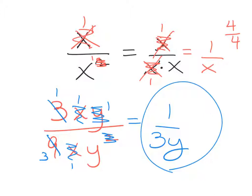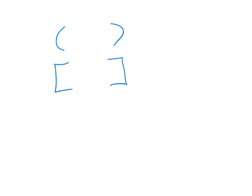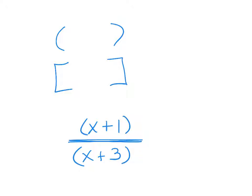One thing I want to talk about is grouping symbols. Parentheses are grouping symbols, brackets are grouping symbols, but a fraction bar is also a grouping symbol. If I have x + 1 over x + 3, the numerator and denominator are each grouped together by the fraction bar. When I go to simplify this rational expression, I can't just cancel the x on top with the x on bottom, because each x is attached to the 1 and to the 3. This rational expression is already in simplest form.